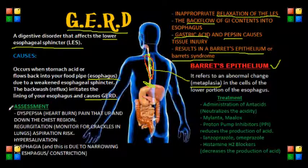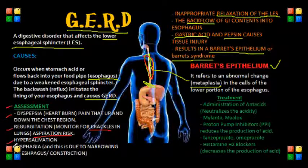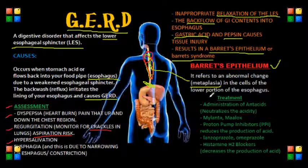When assessing patients, we may see heartburn or dyspepsia, with pain up and down the chest region. There can also be regurgitation, so we need to monitor for crackles in the lungs because the patient is at risk for aspiration. Other signs include hypersalivation and dysphagia, which can occur due to the narrowing or constricting of the esophagus.